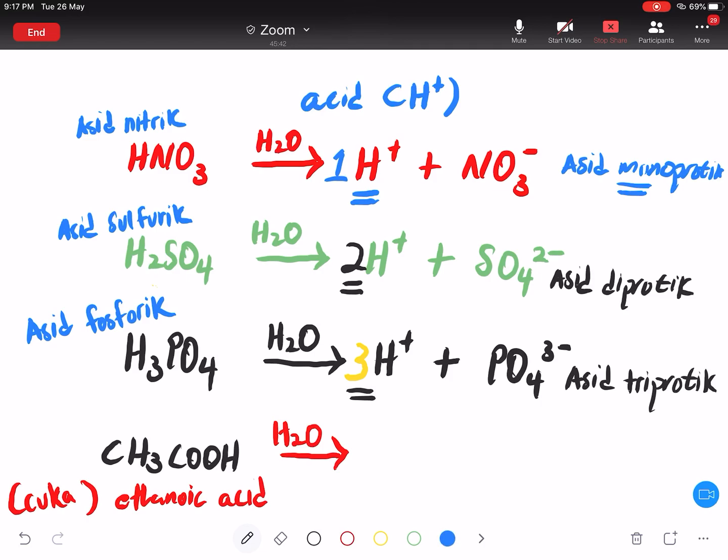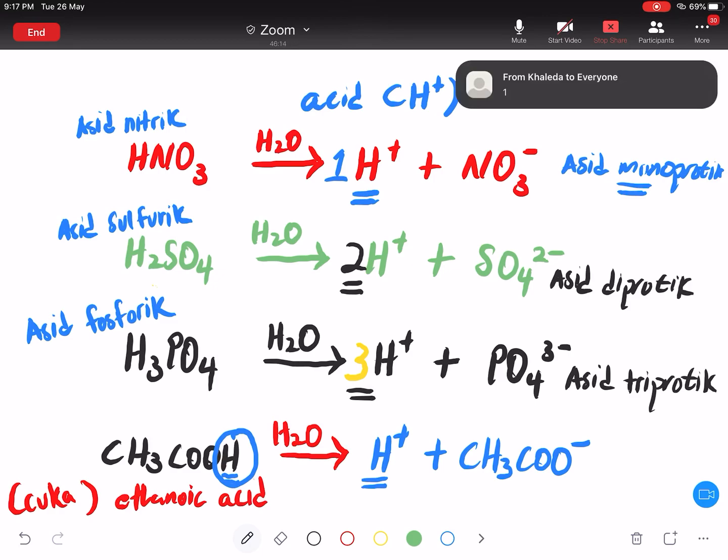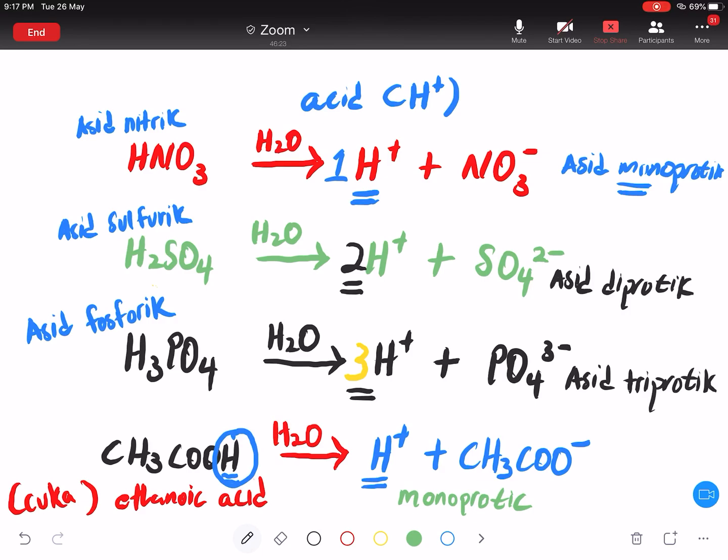Apa yang Arrhenius cakap? Acid mestilah satu benda yang ada hydrogen ion. Hydrogen ion dia ambil dekat belakang. Inilah hydrogen ion. Maka you ada H plus. Plus belakang dia tu tulis balik CH3COO minus. Maka dapatlah how many H plus saya ada? Ada berapa H plus? Satu. Maka dia adalah sejenis monoprotic acid. Dia adalah sejenis monoprotic acid. Simple like this. It's very simple.